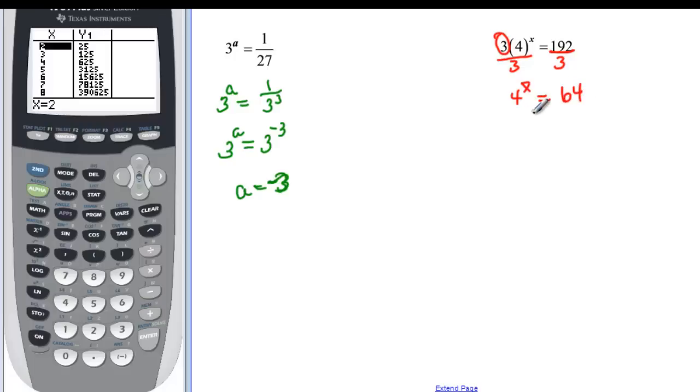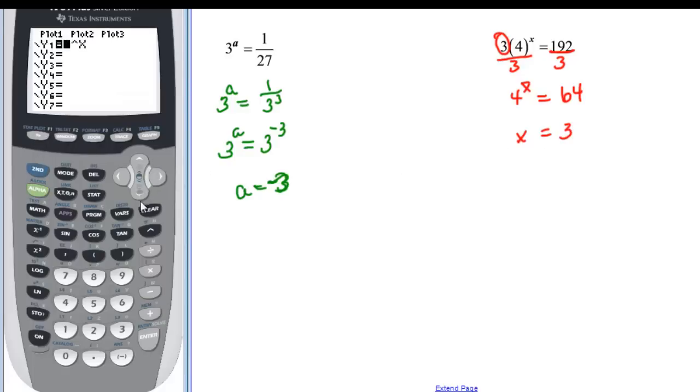So 4 to the x is going to be equal to 192 divided by 3 is going to be 64. And so now you can either say 4 to the first is 4 squared, it would be 16 to the third. Oh, there it is. 4 to the third is 64. And if you're really not sure about that, you want to double check it again, come back into your calculator. 4 to the x, and look at your table, and there it is, 3 is 64.